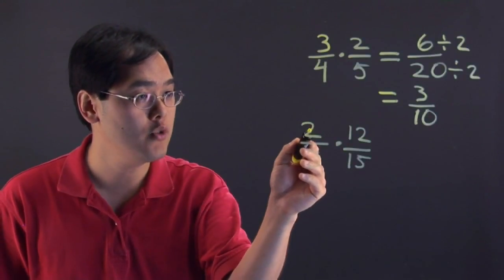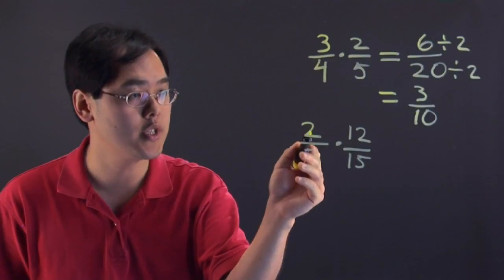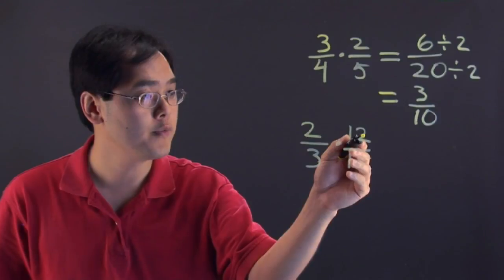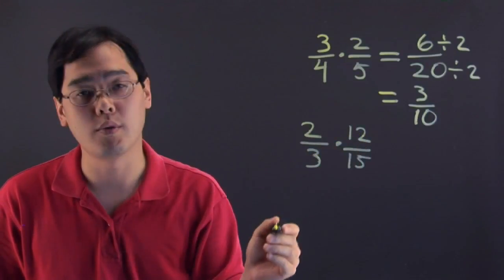Now as you can tell 2 does not reduce with the 3 and 2 does not reduce the 15 so nothing can be done with the 2 right now. But if you take a look at the 12, 12 and the 3 will reduce. In fact 12 divided by 3 is going to give you 4.